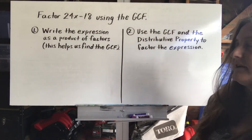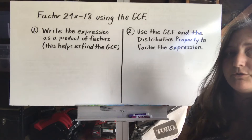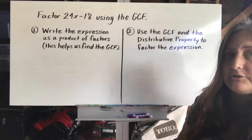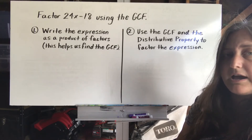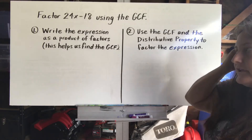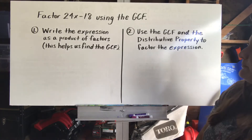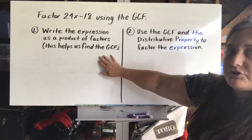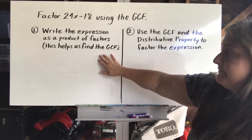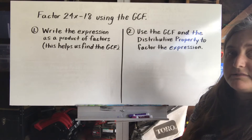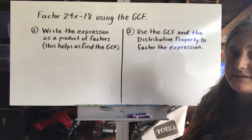So let's say we have the expression 24x minus 18, and we're being asked to factor it using the greatest common factor, or the GCF. The first thing we want to do when factoring an expression is write the expression as a product of factors, because this is going to help us find the GCF.